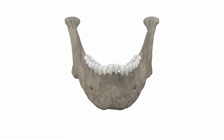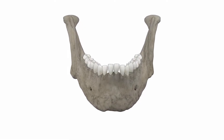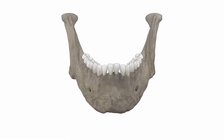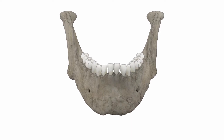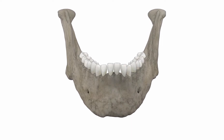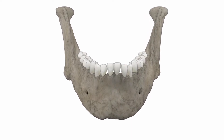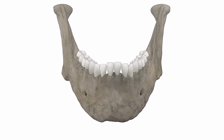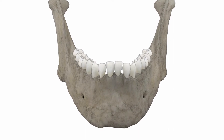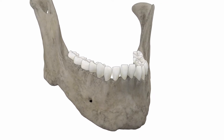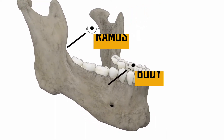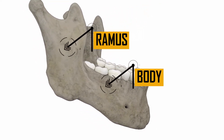The mandible is the largest and strongest bone of the human skull. It is commonly known as the lower jaw and is located inferior to the maxilla. The mandible is formed by a body and a pair of rami, along with condyles which form the temporomandibular joint and coronoid processes.